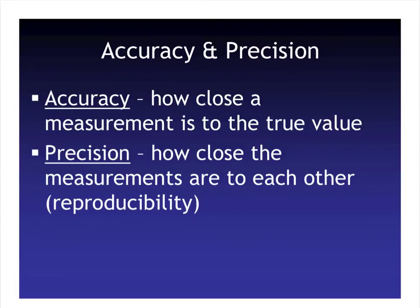That gets me to accuracy and precision. Accuracy means how close the measurement is to the true value. So let's say we were measuring some blocks and the blocks measured one gram. When you did your measurements, you said that they came out to half a gram — you're not exactly being accurate, because you're not getting what the actual measurement is.